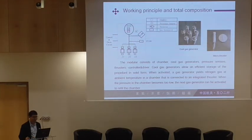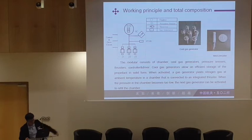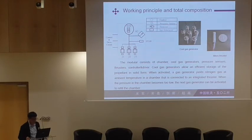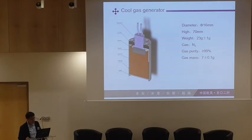And we use the solid gas approach. This one is the cold gas generator, and the other part is the microstructures. The model consists of chambers, cold gas generators, pressure sensors, thrusters, and control drivers. The cold gas generator allows efficient storage of the propellant in solid form. When activated, a gas generator uses nitrogen gas at ambient temperature in a chamber that is connected to an integrated structure. When the pressure in the chamber becomes too low, the next gas generator will work and fill the gas in the chamber.